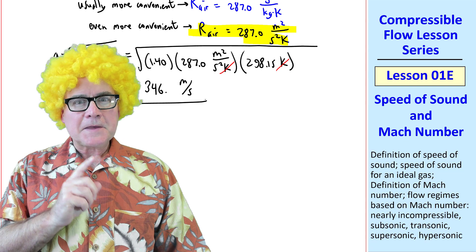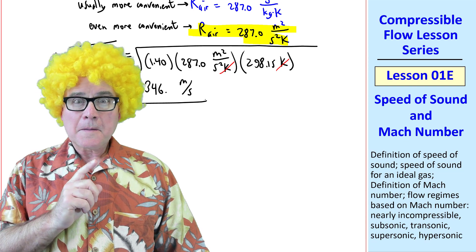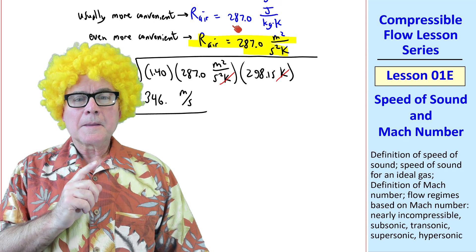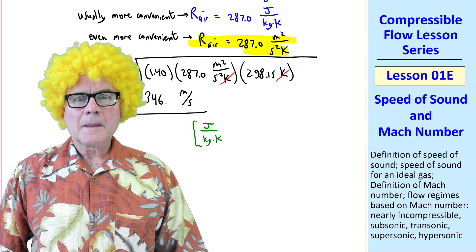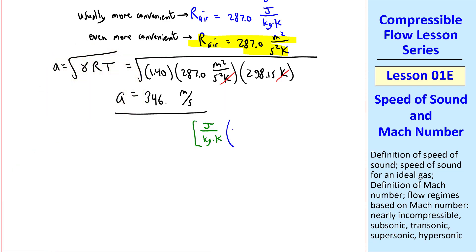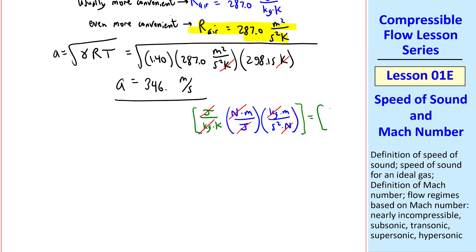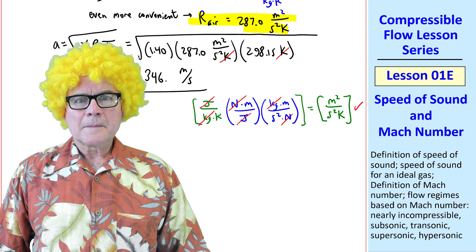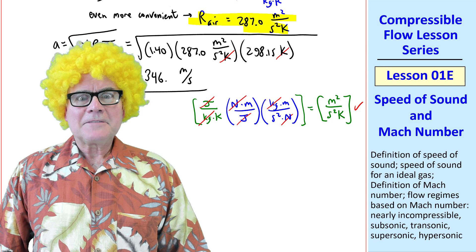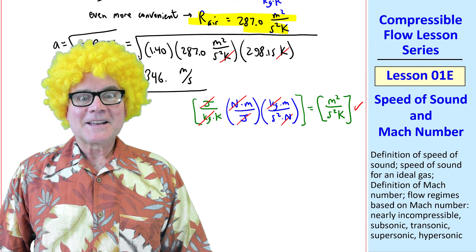Seth, how did you get those units for R? Well, Boris, I'll show you. If we start with these units for R, joule per kilogram K. And we apply some unity conversion factors. A newton meter is a joule, getting rid of joules. A kilogram meter per second squared is a newton, from Newton's second law. Getting rid of newtons and kilograms. This becomes meters squared per second squared K. Which are the units I used up here. That's lovely. Thank you, sir. You're welcome, Boris.